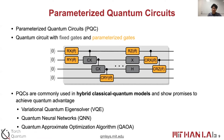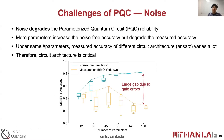Parameterized quantum circuits contain fixed gates such as CX and X, and also parameterized gates such as rotation and controlled rotation gates. They are commonly used in hybrid classical-quantum models such as variational quantum eigensolvers, quantum neural networks, and quantum approximate optimization algorithms. However, PQCs have two major challenges. Firstly, quantum noise degrades PQC reliability.